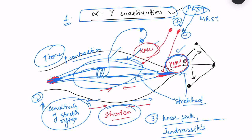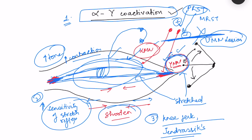In upper motor neuron lesions we get hyperactive stretch reflexes. This happens because the negative inhibitory influences on the gamma motor neuron are disrupted, releasing gamma motor neuron activity, making it more active and increasing the sensitivity of the stretch reflex. Additionally, factors like anxiety and unexpected movements also increase gamma motor neuron activity, which is why in anxiety we also get hyperactive tendon reflexes — another term for stretch reflex jerks.